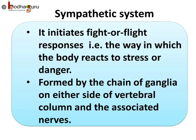The second type is the sympathetic system. It initiates fight or flight responses — the way in which the body reacts to stress or danger. It controls activities that increase energy expenditures. The sympathetic system is formed by the chain of ganglia on either sides of the vertebral column and the associated nerves. That was all about the autonomous nervous system. Bye-bye.